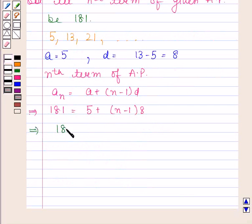This implies 181 minus 5 is equal to (N minus 1) into D. Now, 181 minus 5 is 176.